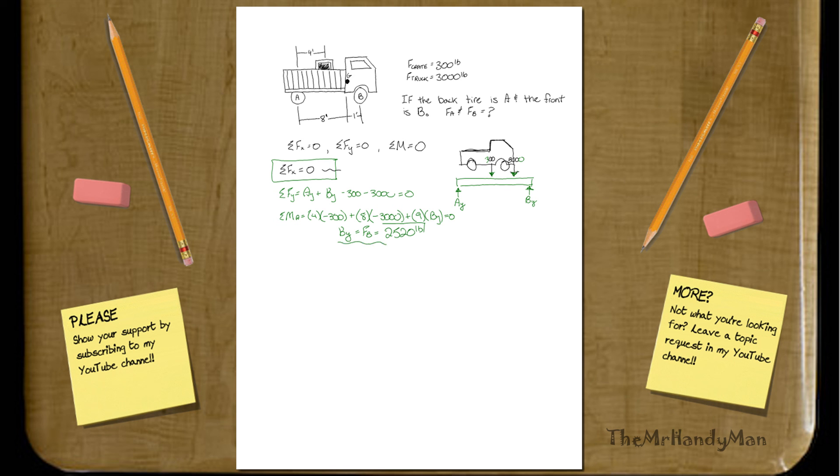So what you need to do is take this result and plug it back into our Y-direction force function, which is going to be FY equals AY plus 2520 pounds minus 300 minus 3,000 equals 0.